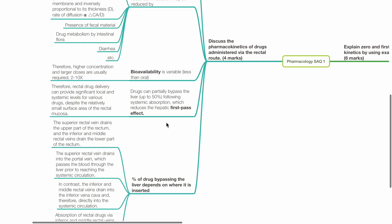Drugs can partially bypass the liver — up to 50% — following systemic absorption, which reduces the hepatic first-pass effect. Therefore, rectal drug delivery can provide significant local and systemic effects for various drugs despite the relatively small surface area of the rectal mucosa.